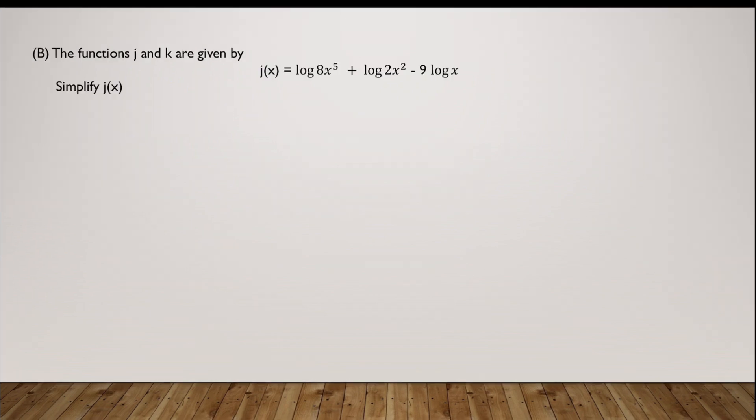Now in part b we are given two functions j(x) and k(x). My k(x) is on the next slide so we can work on each one of them separately. Now they want us to simplify j(x) and rewrite it as a logarithm with a single base. We will start simplifying it. We know that according to the product rule this can be written as log 8 into x to the power 5 times 2 into x square. Now we know that if I have a subtraction, and again note that they have the same base. All of them are base 10. So it helps me simplifying it.